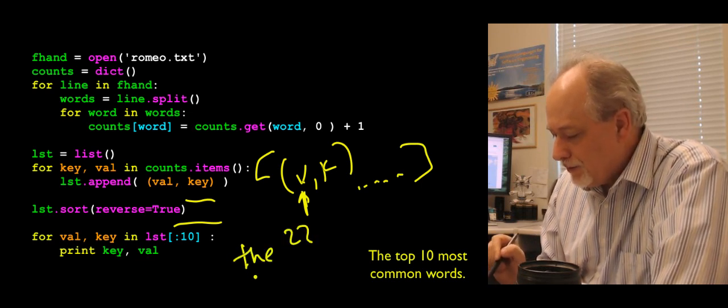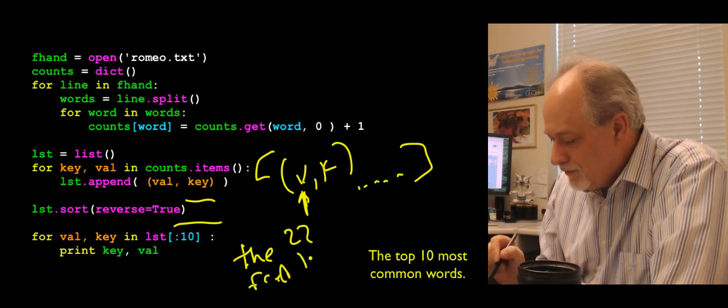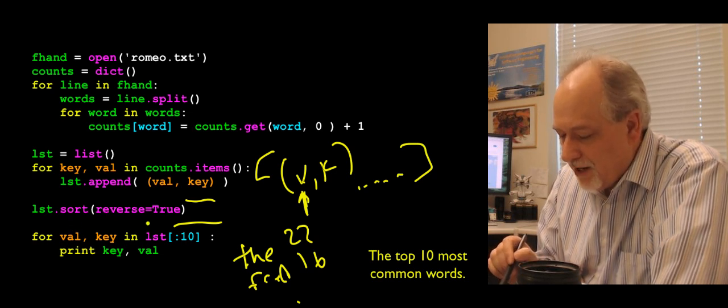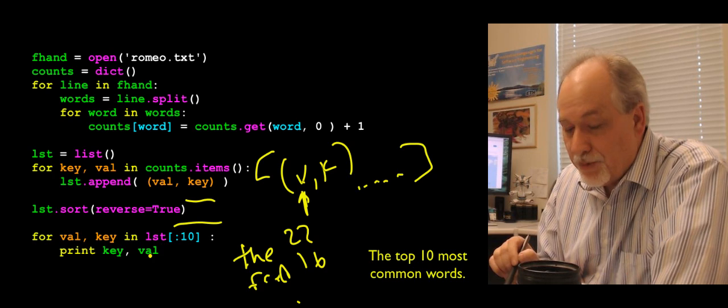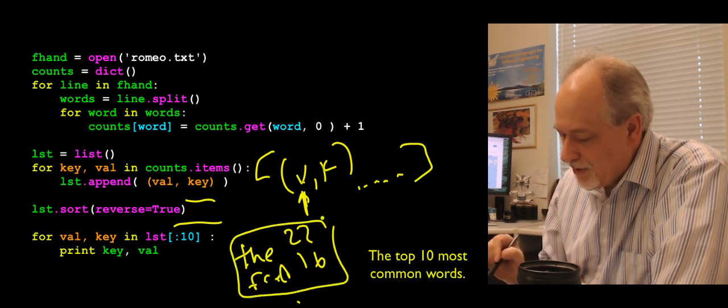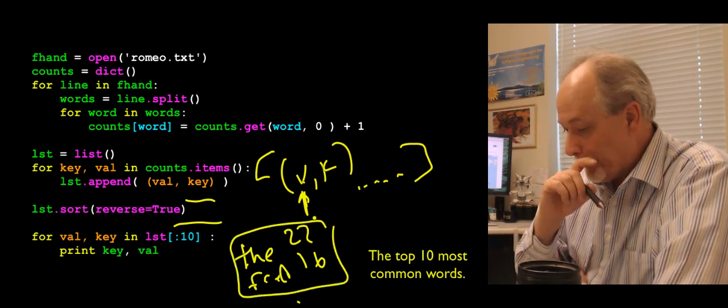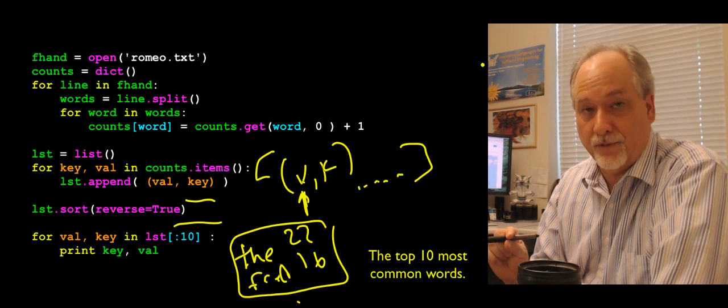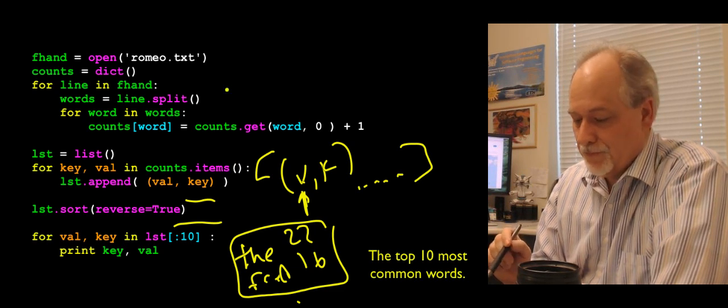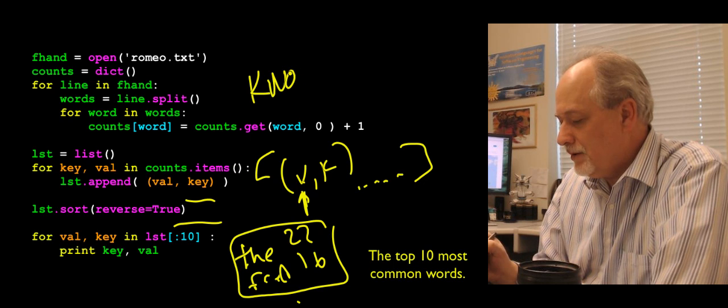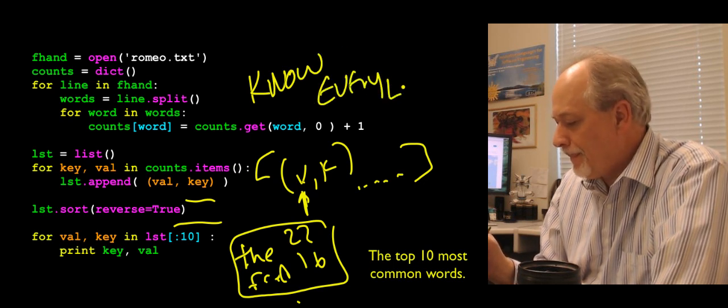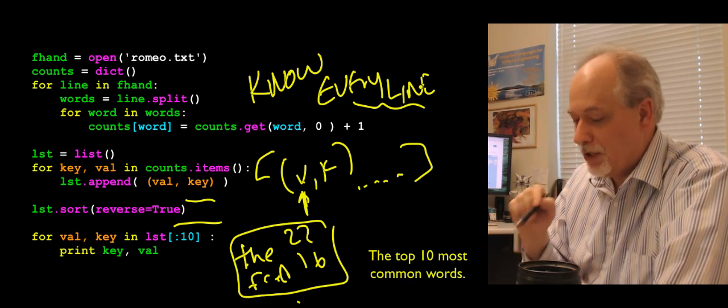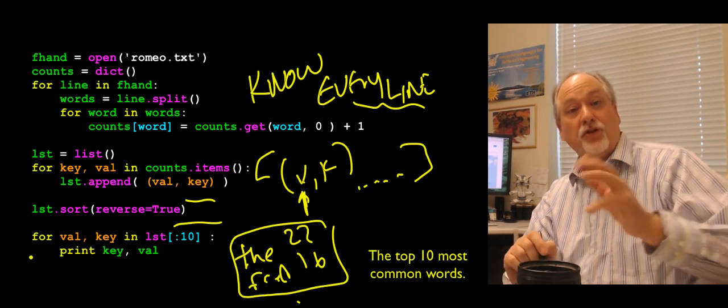So it's going to print out the 22, Fred 16. And so I'm going to print the first 10. So this list is in val key order. The tuples are val key order. And so I'm going to print it out in key val, just so that I print out in a way that makes the most sense. And so this is a simple way to do a simple histogram of the occurrence of words in a file. So again, you should know this. You should know every line. Go back, review a couple times. You should know the meaning of every line of this. And if you do, that's really good.